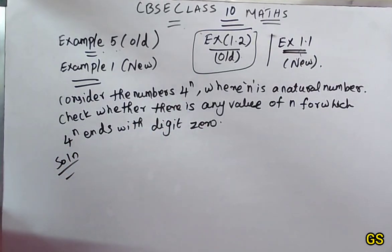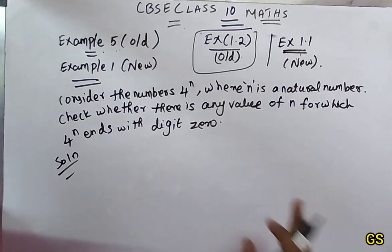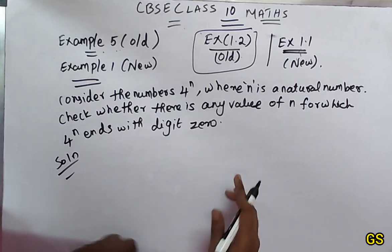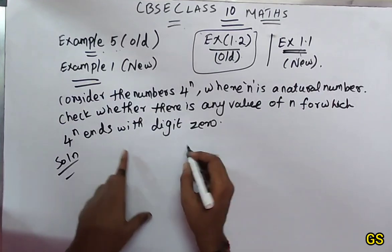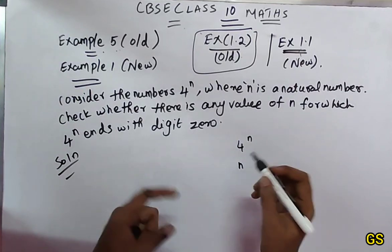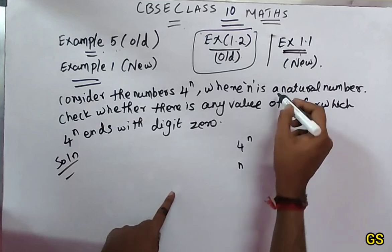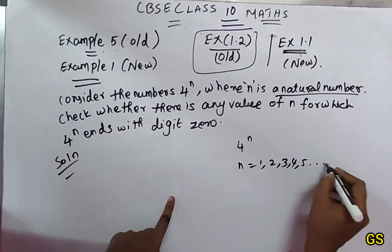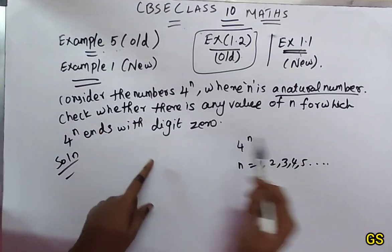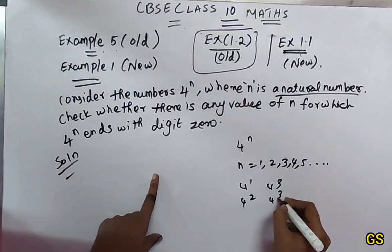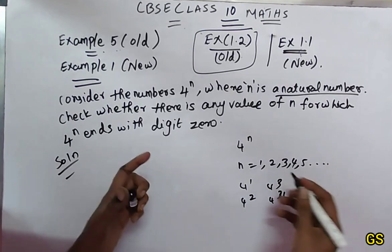Consider the numbers where n is a natural number. Check whether there is any value of n for which 4 power n ends with the digit 0. Now, first thing: 4 power n, where n is a natural number: 1, 2, 3, 4, 5...